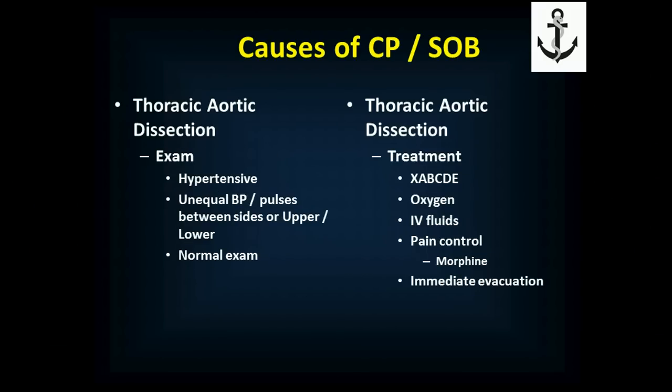On exam, blood pressure is typically elevated. You may find unequal pulses — unequal blood pressure between the two arms, or unequal pulses between arms and legs, or it could be a completely normal exam. If you think this is what's going on — sharp severe tearing chest pain radiating to the back, or chest pain with neurologic symptoms — XABCDEF, give oxygen, give IV fluids. Pain control with morphine helps keep blood pressure down enough to avoid worsening the tear, and they need immediate evacuation. Discuss these patients with medical control early.